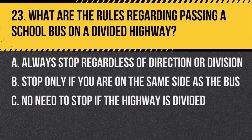Question 23. What are the rules regarding passing a school bus on a divided highway? A. Always stop regardless of direction or division. B. Stop only if you are on the same side as the bus. C. No need to stop if the highway is divided. Answer: C. No need to stop if the highway is divided. On a divided highway, only vehicles on the same side as the stopped school bus must stop.